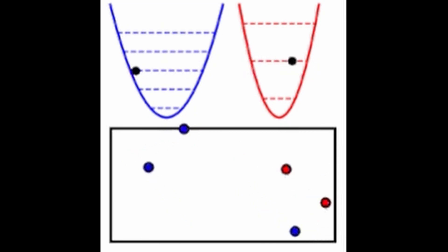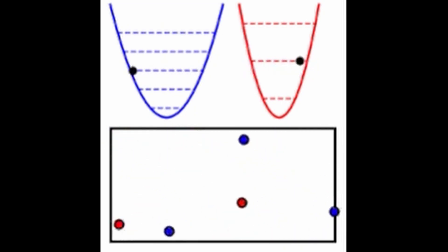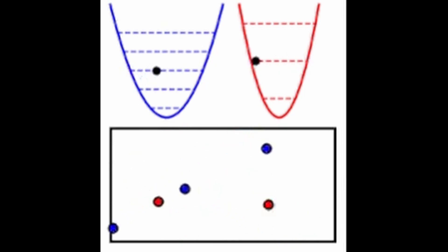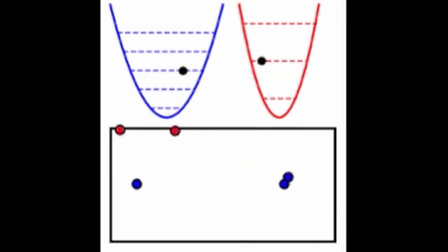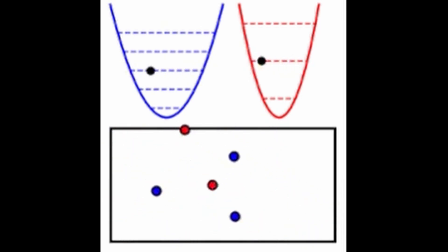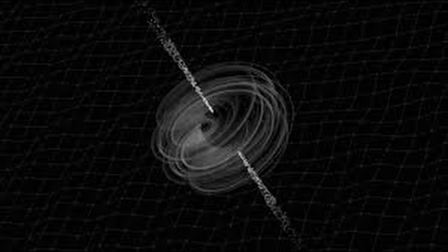Conclusion: quantum field theory is a powerful and fundamental theory that describes the behavior of subatomic particles in terms of fields that permeate all of space and time. It is a quantum theory, meaning that it incorporates the principles of quantum mechanics, and it has made many important predictions about the behavior of particles that have been confirmed by experiment. While the mathematics of quantum field theory can be quite complex, its physical interpretation is intuitive and provides a deep understanding of the behavior of the subatomic world.